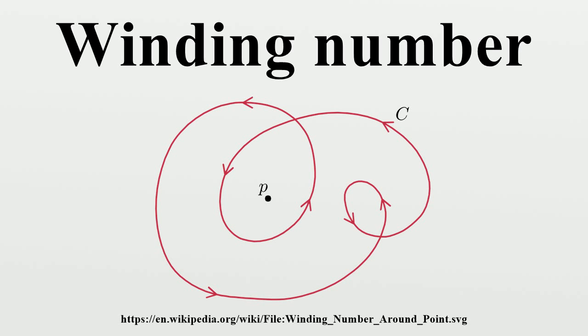The winding numbers of the curve around two points in the same region are equal. The winding number around the unbounded region is zero. Finally, the winding numbers for any two adjacent regions differ by exactly one. The region with the larger winding number appears on the left side of the curve.